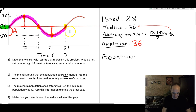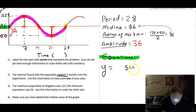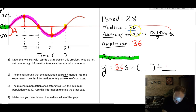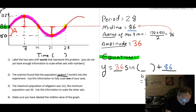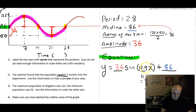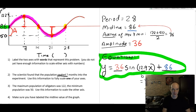Our next job is to write an equation matching this graph. The form is y = A·sin(Bx) + midline. The amplitude gives us 36, the midline gives us 86, and B = 360 / period = 360 / 28 ≈ 12.9. So the final equation is y = 36·sin(12.9x) + 86, and we'll use this to solve the rest of the problems.